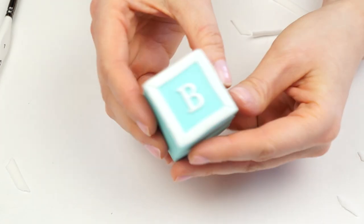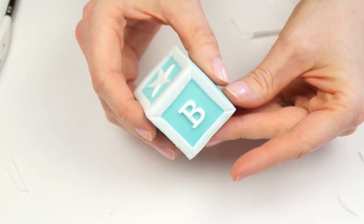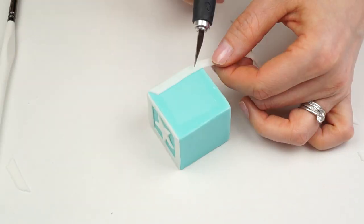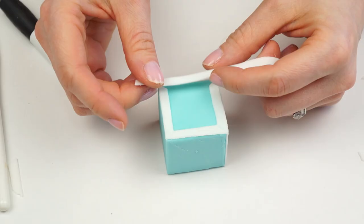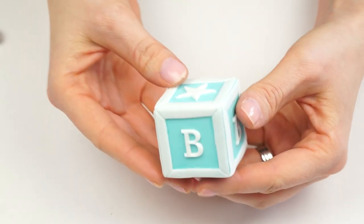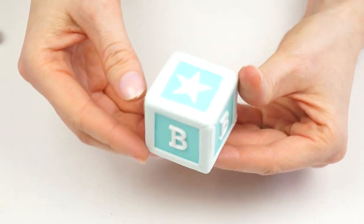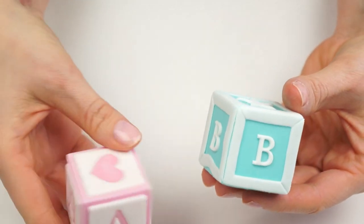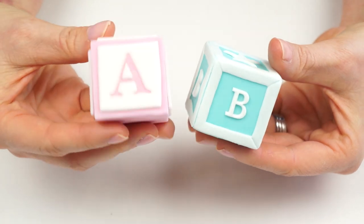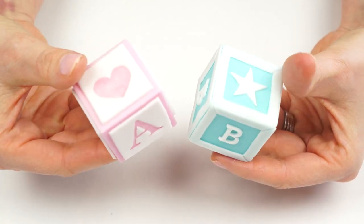Now taking one of those small Bs from the Tappits I'm going to add some edible glue onto the back and just pop that in the center of my block. Now I'm going to work my way around adding the border and the letters onto the next three sides. So there we have our third little baby block and as you can see it's just the opposite of the first ones we created.